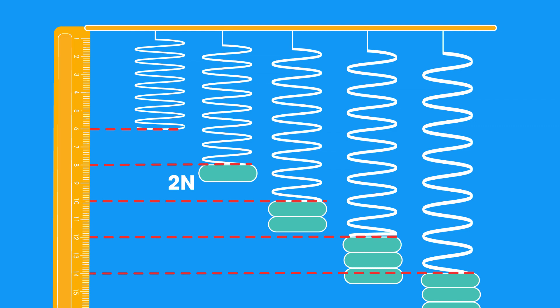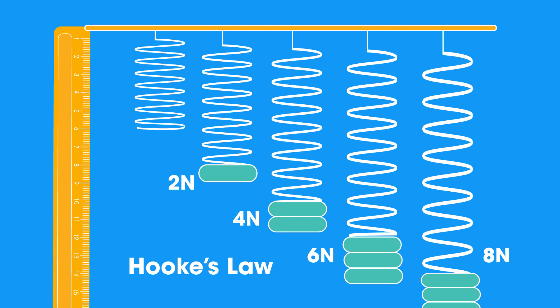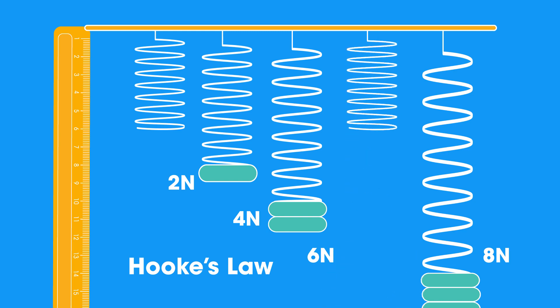2N's force extends the spring by 2cm, 4N by 4cm, up to 8N and 8cm. Hooke's Law states the extension is directly proportional to the force applied, provided that the elastic limit is not exceeded.